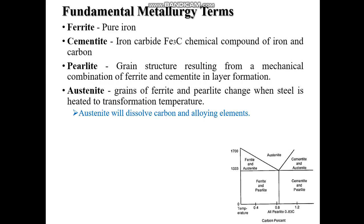Austenite is the solid solution of carbon in gamma iron. It has an FCC structure. The solubility of carbon in austenite reaches a maximum of 2.11% at 1148 degree Celsius and decreases to 0.8% at 723 degree Celsius. Austenite is non-magnetic and soft, and is normally unstable at all temperatures.